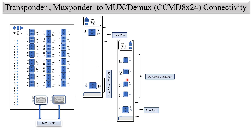The output of the CCMD8 Cross 24 — for example, channel one out (port number one) — is connected to the RX port of the transponder line port, and the TX port of the transponder is connected to the IN port of the CCMD8 Cross 24. Similarly, for the muxponder, the TX output is connected to the RX port, and the TX port of the muxponder goes towards the IN port of the channel.